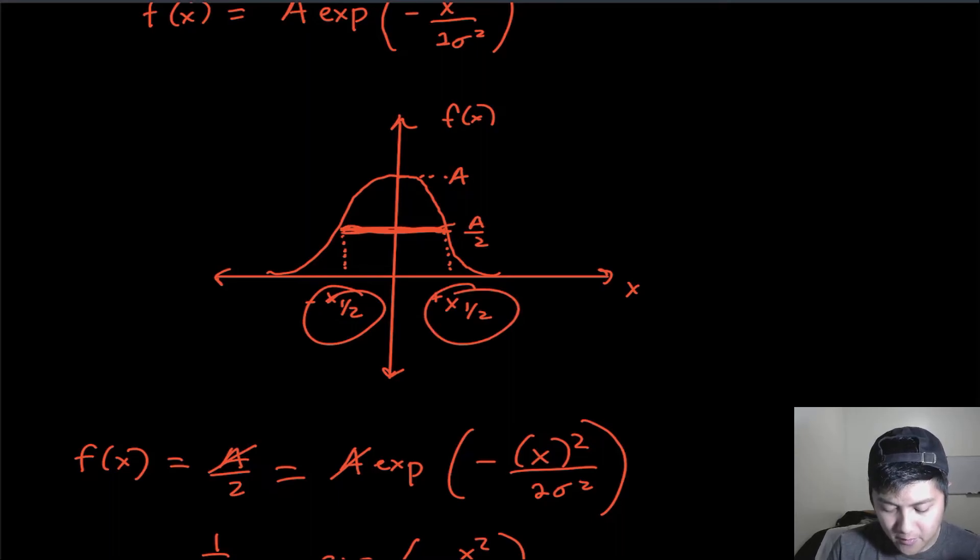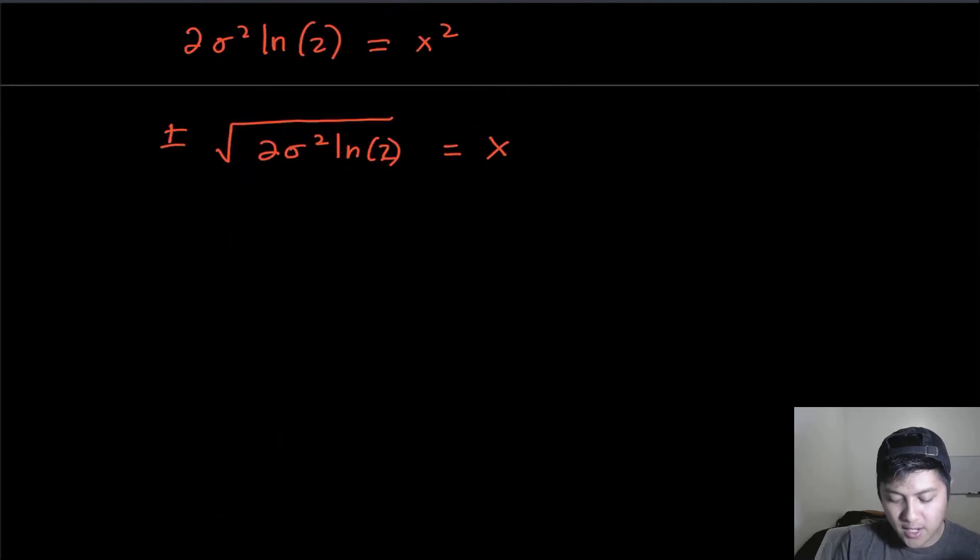And now we just want to get the total length of this, right? But we know that they're both equally spaced apart because a Gaussian is a symmetric function. It's the same distance this way as it is that way over there. So we can just take one of these values and multiply it by two. And we're just going to use the magnitude or the positive value of that.